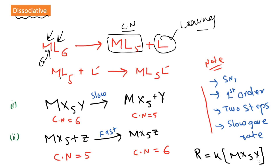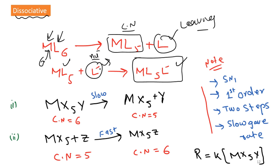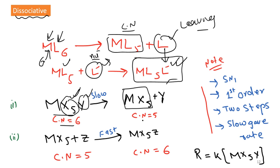In the second step, the intermediate is attacked by another reagent, which may be electrophilic or nucleophilic, and the final product is formed. Here, ligand L is replaced by ligand L'. In another example, five ligands are X and one is Y, with coordination number six. The intermediate state has coordination number decreased by one, and this is the slow step.